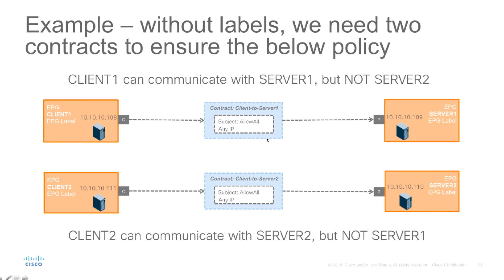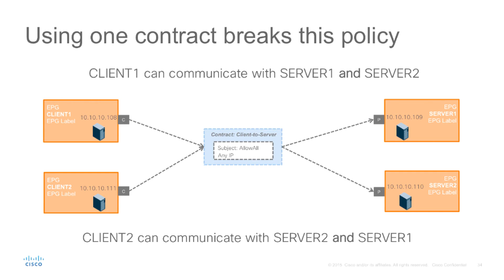In a traditional scenario we would use two contracts — client to server 1 and client to server 2 — allowing all connectivity in this particular case. If we use a single contract we're breaking our policy. If both server 1 and server 2 provide the same default contract, then by consuming that contract client 1 can communicate with server 2 and vice versa, which is not the desired intent.